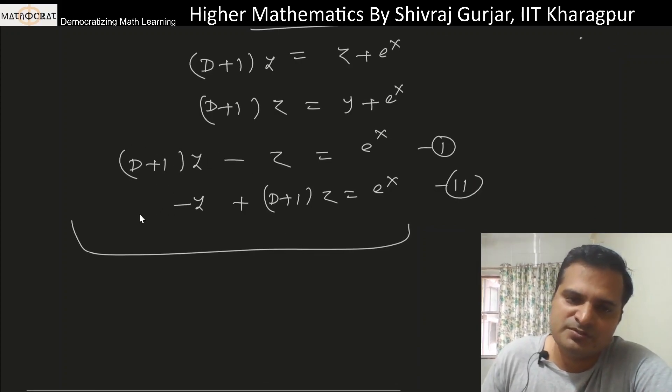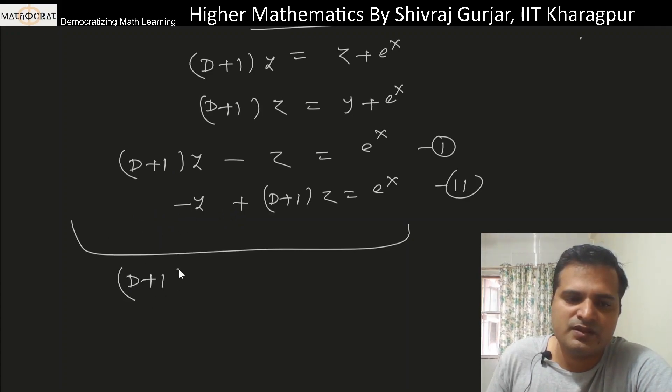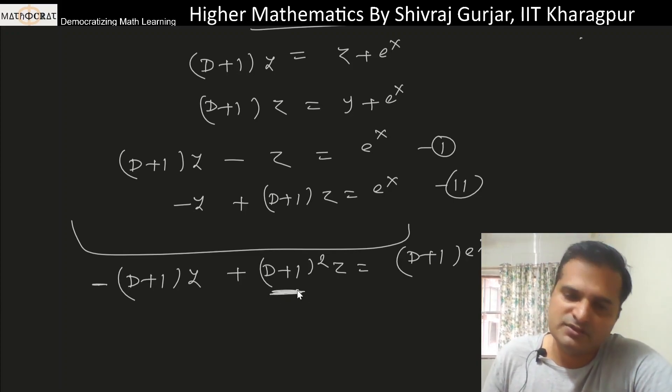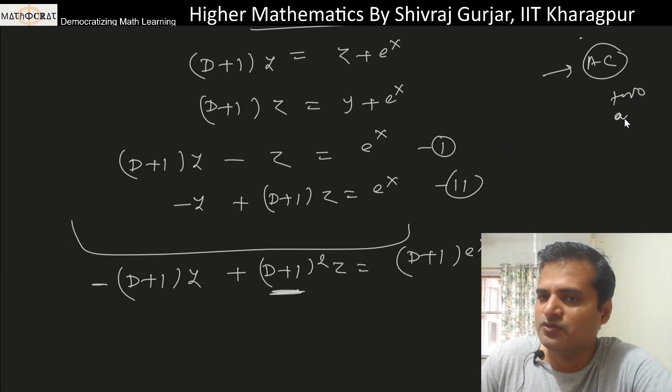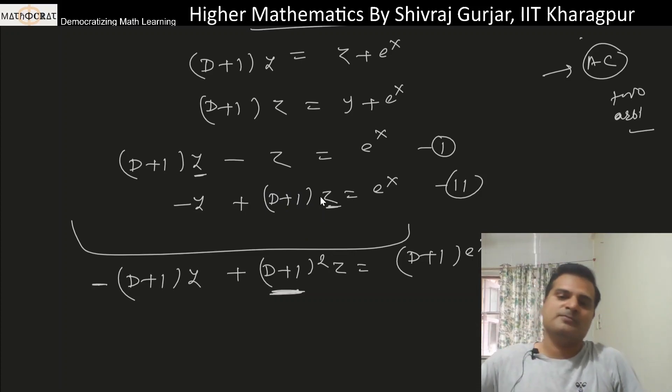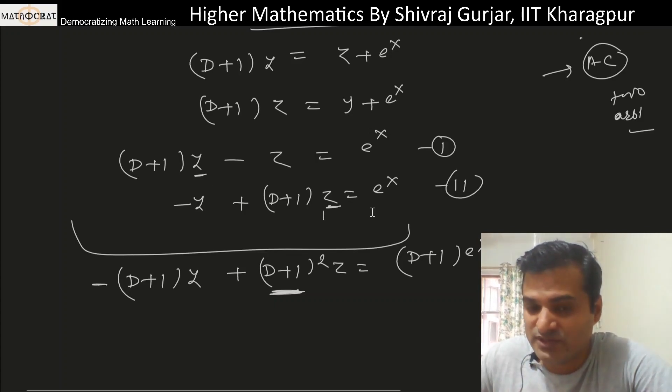To solve this linear differential equation, we'll apply (D+1) to the first equation. So we multiply by (D+1), and D is an operator. This gives -(D+1)y + (D+1)²z = (D+1)e^x. Look here - this will decide the number of arbitrary constants because here the order is 2, so there will be 2 arbitrary constants. Even though y and z are dependent variables, their coefficient multiplication will decide the order, which determines the number of arbitrary constants. There cannot be more than two arbitrary constants - that's something we have to take care of.